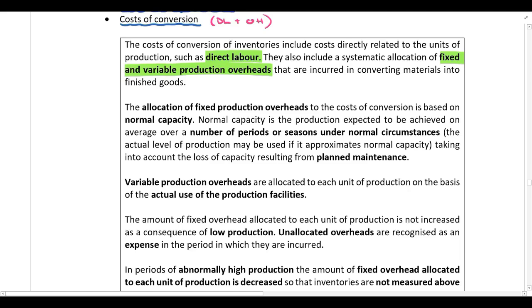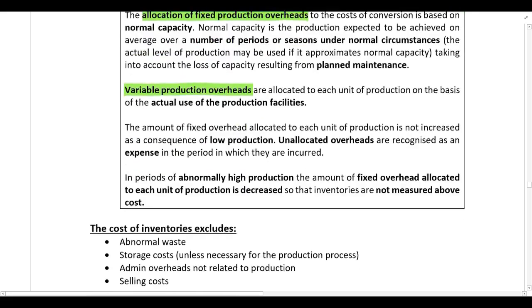IAS 2 also tells us how to deal with the allocation of fixed production overheads, how to deal with variable production overheads, what to do in periods of low production, and what to do in cases of abnormally high production. All of these will be discussed in more detail when we get to our example.